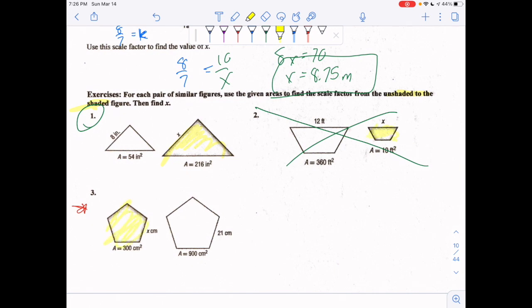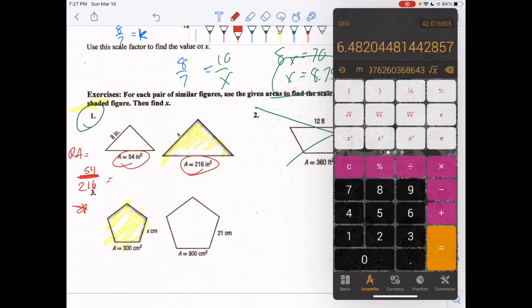Again, you have the areas. Unshaded to shaded, we're gonna go 54 (that's the unshaded) over 216. This looks like a pretty gnarly number—this is your ratio of your area. Let's see if you can simplify. Using my calculator: 216 divided by 54 works, so divide both by 54 and it'll be 1 over 4.